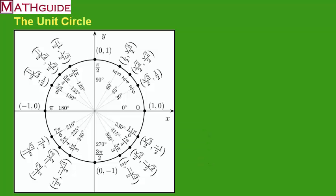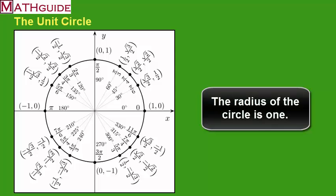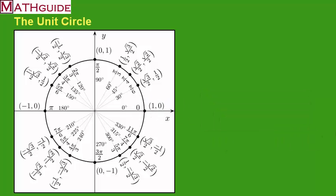The unit circle looks like this. We call it a unit circle because the radius of this circle is special — it actually has a radius of one. You can tell that by looking at the points here. We have a point at (1, 0), here is (0, 1), here's (-1, 0), and here's (0, -1). All of those points are one unit away from the origin.